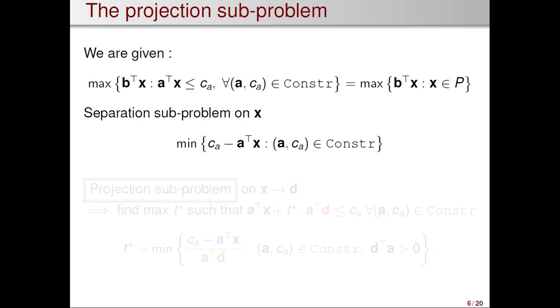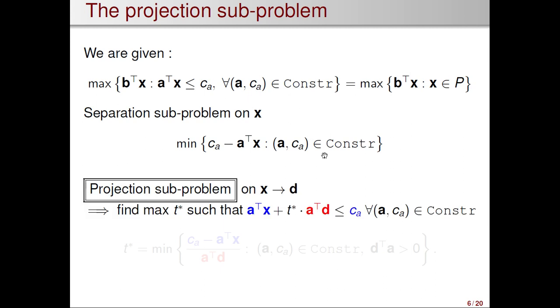Imagine we have such a linear program. We maximize b dot product x under the condition that, for any constraint defined by coefficients a on the right-hand side c_a, we have a dot product x less than or equal to c_a. The separation subproblem on some x is solved by finding the optimal solution of this problem. We need to minimize this over all constraints. The projection subproblem is a bit different. We need to project from some x, feasible x, towards some d.